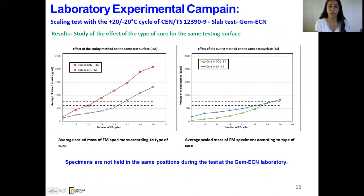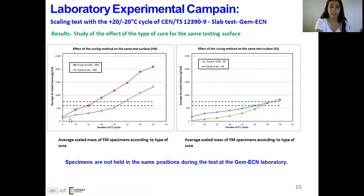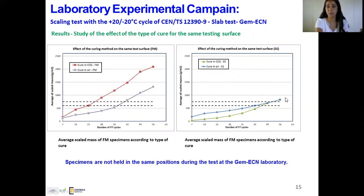About the results of the laboratory campaign, we divided our study into two parts. First, we studied the effect of the type of cure for the same testing surface. For the mold bottom face, curing in CO2 has a negative effect on scaling resistance — specimens cured in CO2 scaled more than those cured in air. This is not the same for the sawn face, where the effect of CO2 curing is not pronounced after 56 freeze-thaw cycles, possibly because aggregates block CO2 diffusion in the material.